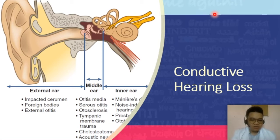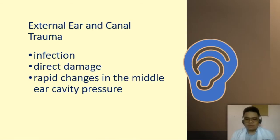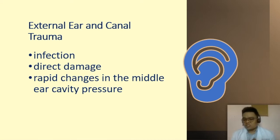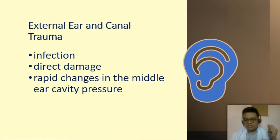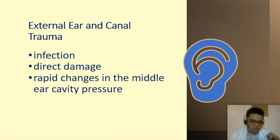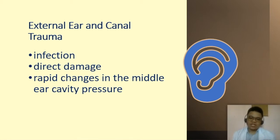We will be discussing sensorineural loss when we get to the inner ear. Now let's talk about the specific changes or problems on your external and middle ear. External ear and canal trauma could be caused by infection, direct damage, or rapid changes in the middle ear cavity pressure — such as taking off in an airplane, an unpressurized cabin, or going underwater without protective equipment.